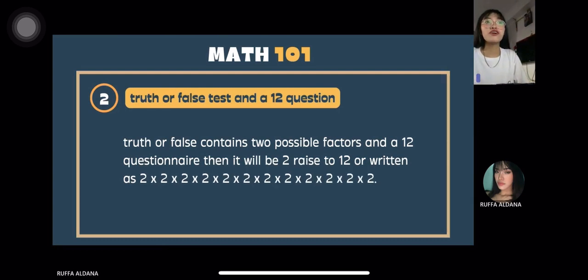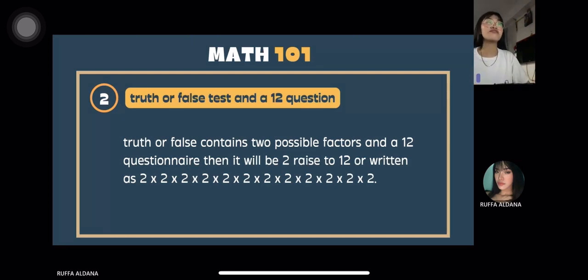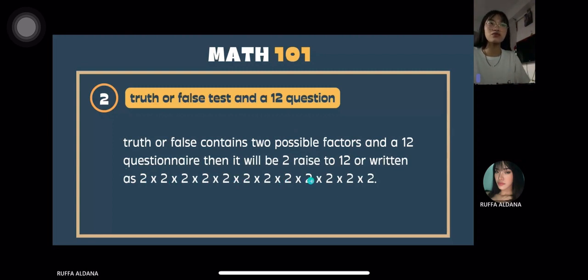The given is a truth or false test where you answer each question with either true or false. We need to find the order of true or false in a 12-question test. Since truth or false contains two possible choices per question, it will be 2 raised to 12, or 2 multiplied together 12 times, since there are 12 questions.